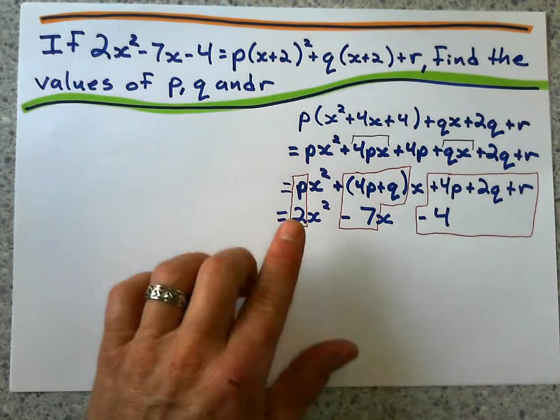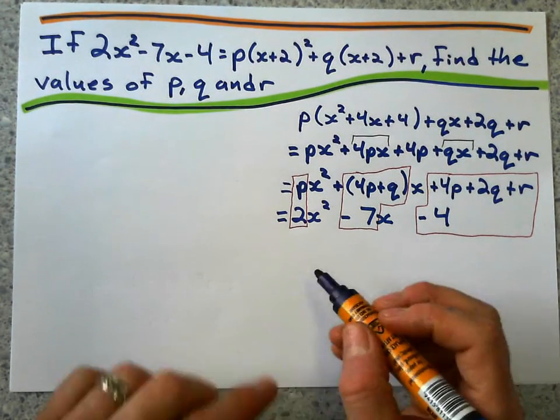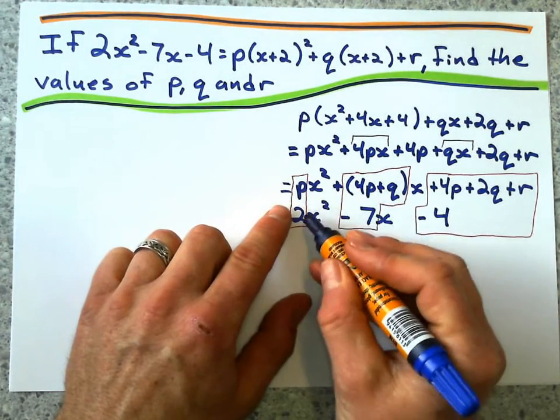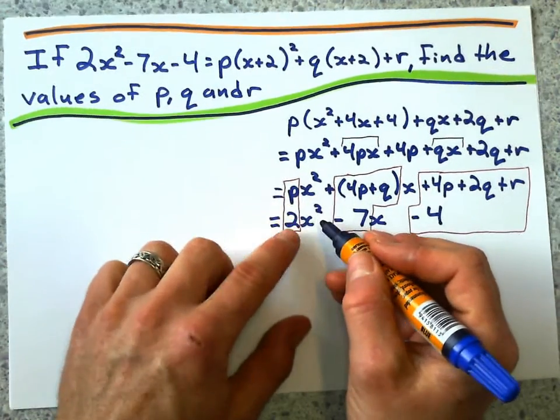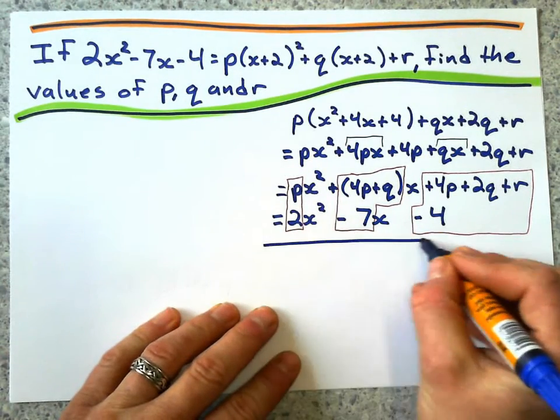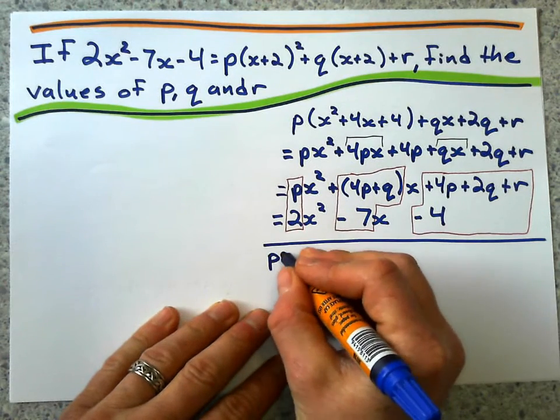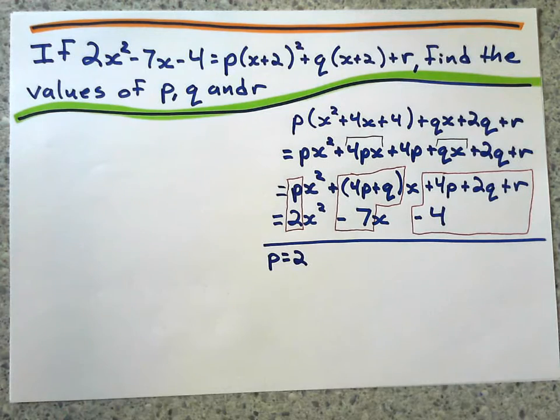Okay, so that seems pretty daunting at first, but let's just take this slowly. Okay, well, I know P has got to equal 2, because if Px squared equals 2x squared, then P equals 2. So P equals 2. That's done.